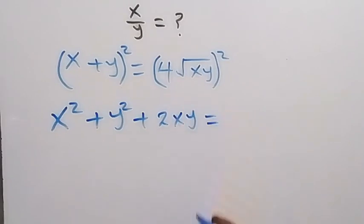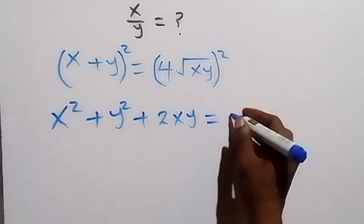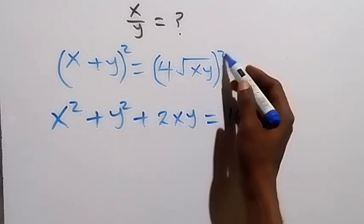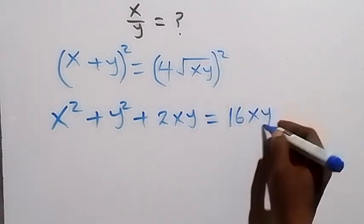Then equals to, on this side, when we square this, this square we have 4, and that's 16. And the square we cancel square root here, that's xy. So we have 16xy.